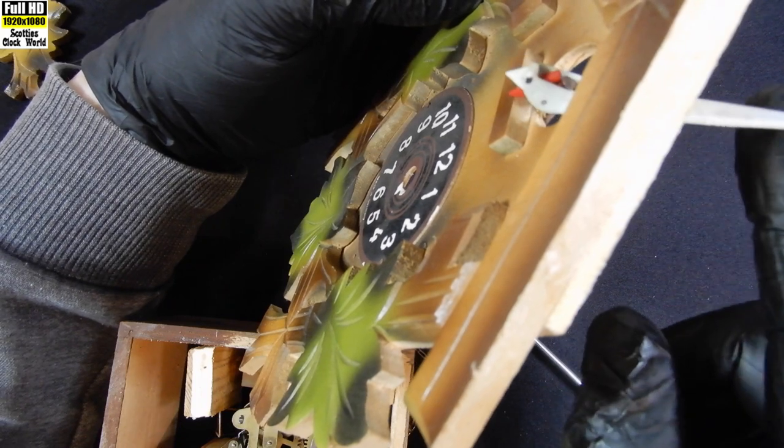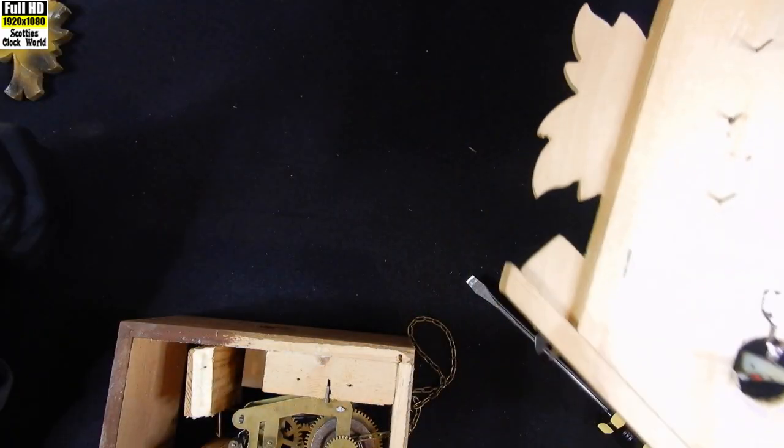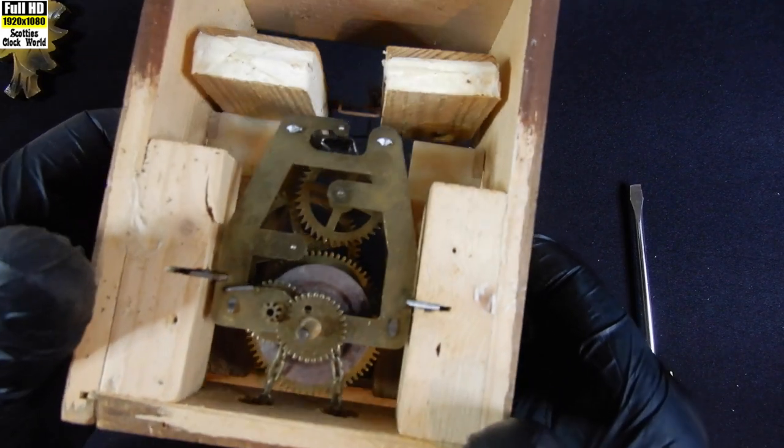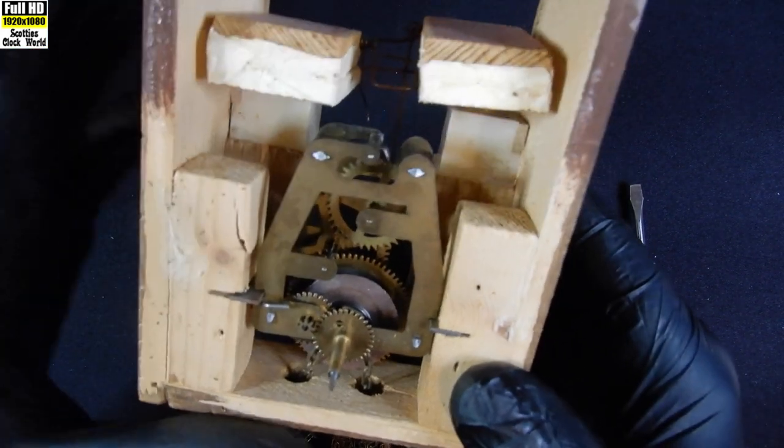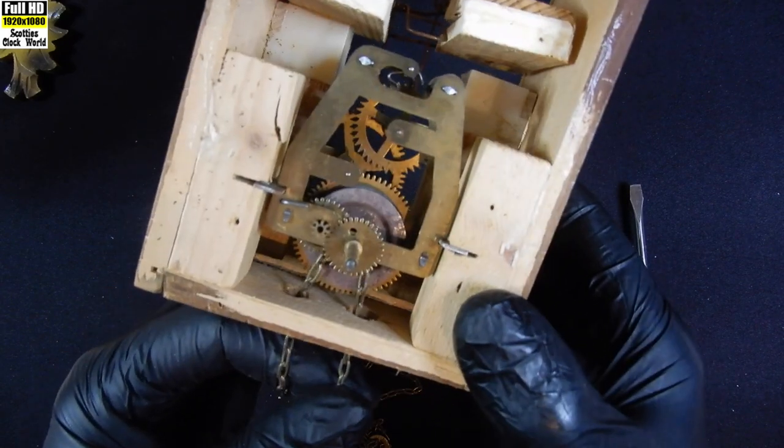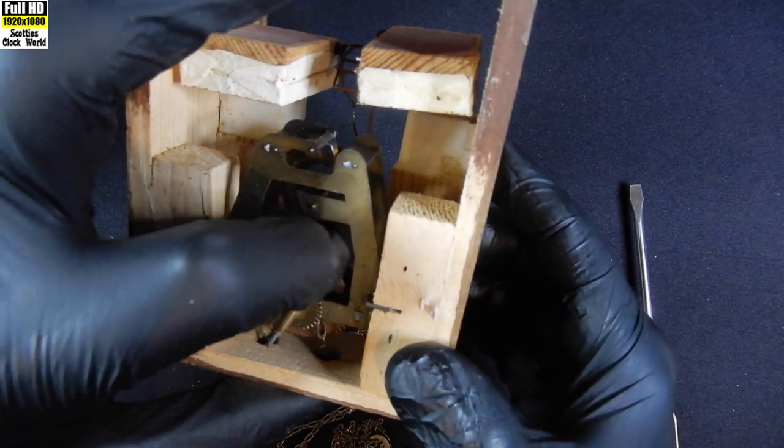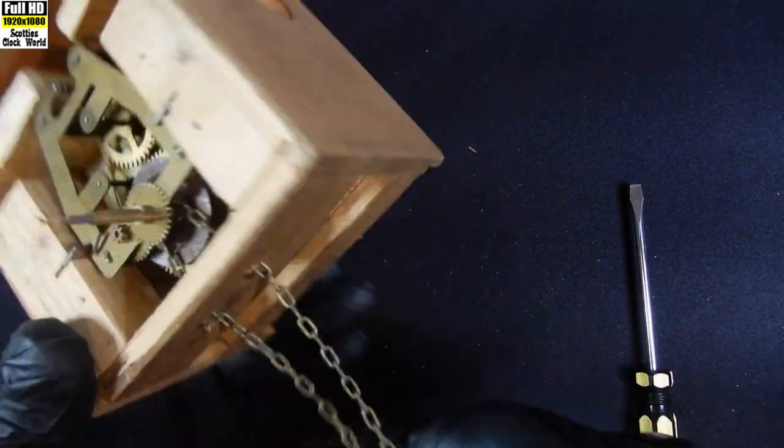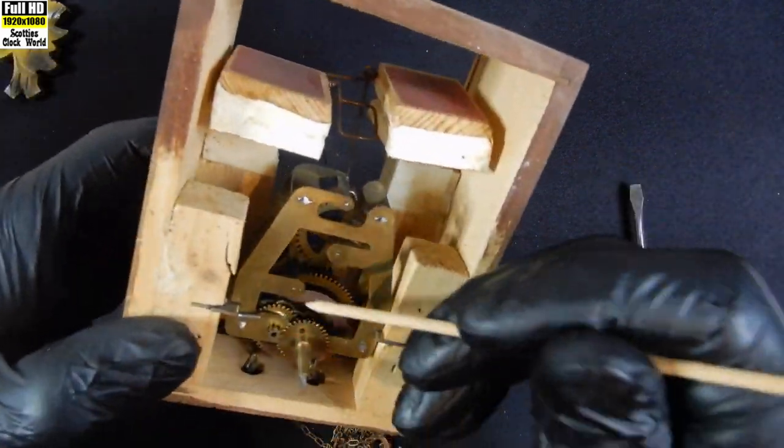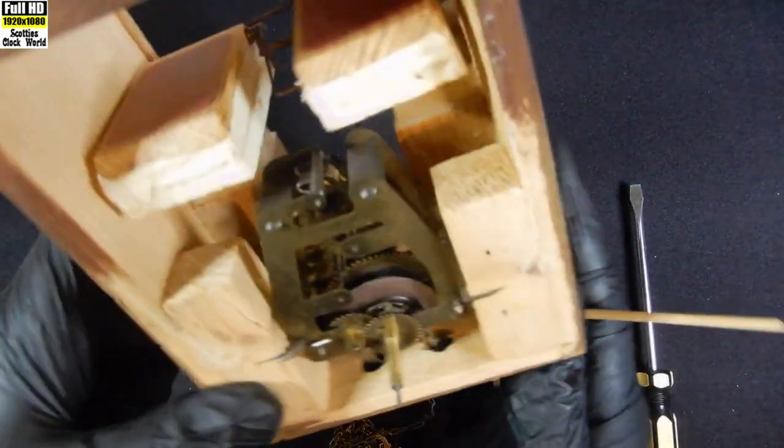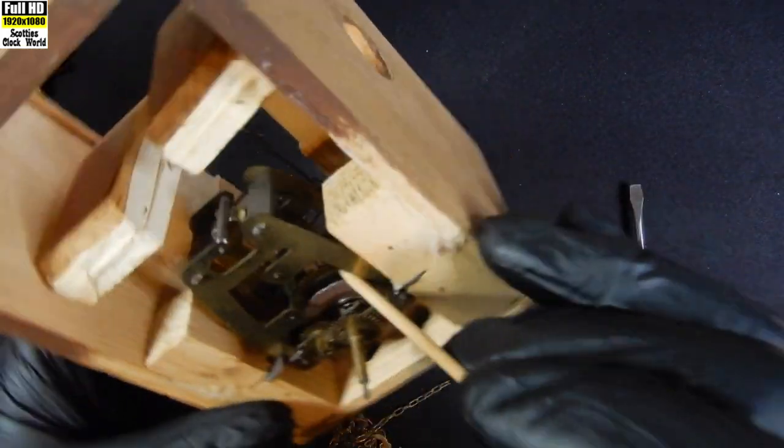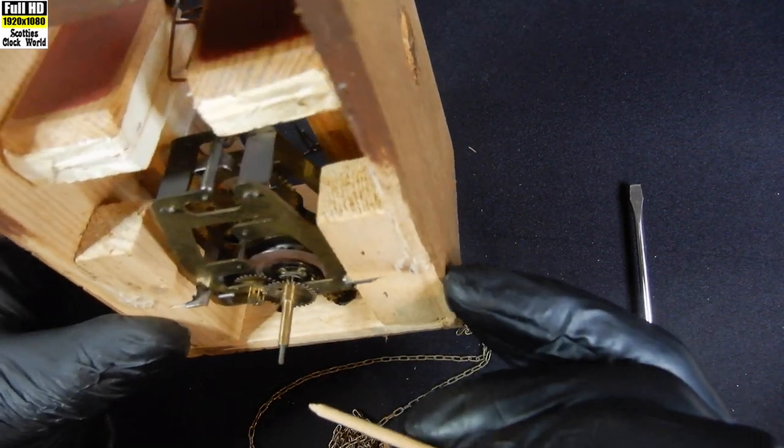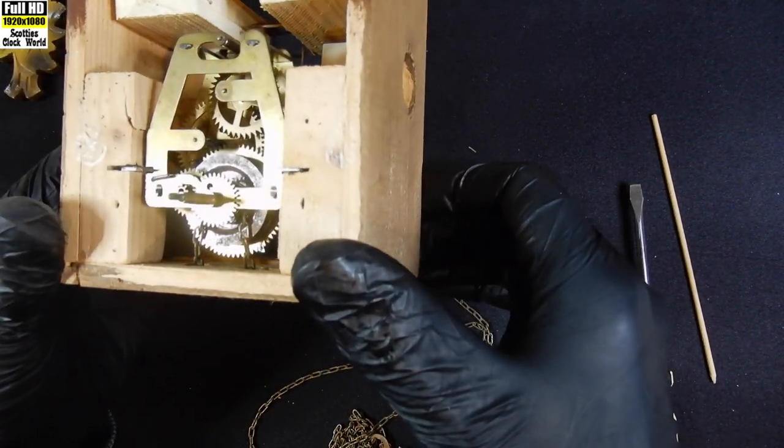We'll look at that in a moment. There's our little cuckoo bird. Put that aside carefully so we don't hurt the little bird. There's our movement, very small movement as you can see. The chains come off the driving wheel. The chain should sit on top of that wheel there, but it doesn't. First thing we'll do is we'll take the chain off.